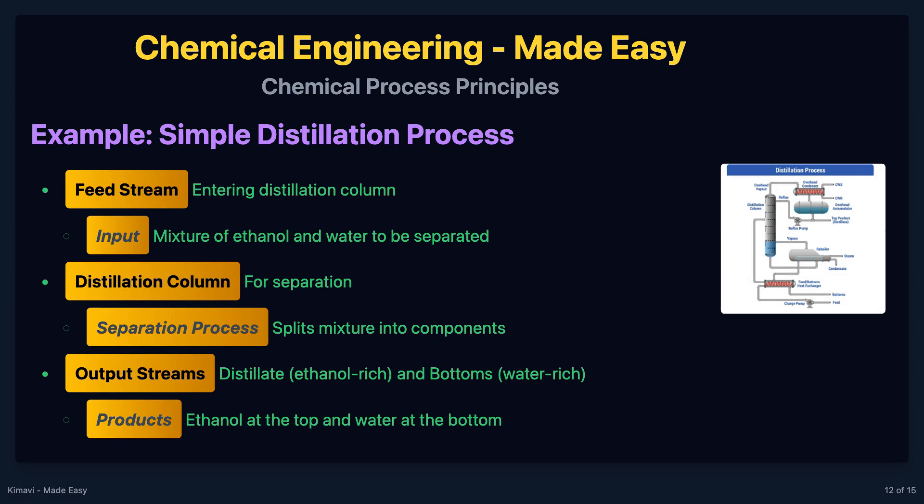Consider a simple distillation process where a mixture of ethanol and water is separated into its components. The process flow diagram for this process would include a feed stream entering the distillation column, the distillation column where separation occurs, and two output streams, one for the distillate, which is ethanol rich, and one for the bottoms, which is water rich.